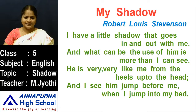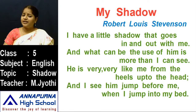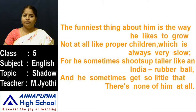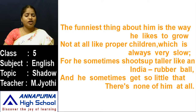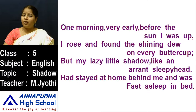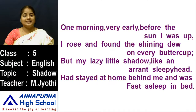Before that, let us read the stanzas. I have a little shadow that goes in and out with me, and what can be the use of him is more than I can see. He is very very like me from the heels up to the head, and I see him jump before me when I jump into my bed. The funniest thing about him is the way he likes to grow, not at all like proper children which is always very slow. For he sometimes shoots up taller like an India rubber ball, and he sometimes gets so little that there is none of him at all. One morning very early before the sun I was up, I rose and found the shining dew on every buttercup. But my lazy little shadow like an iron sleepy head had stayed at home behind me and was fast asleep in bed.